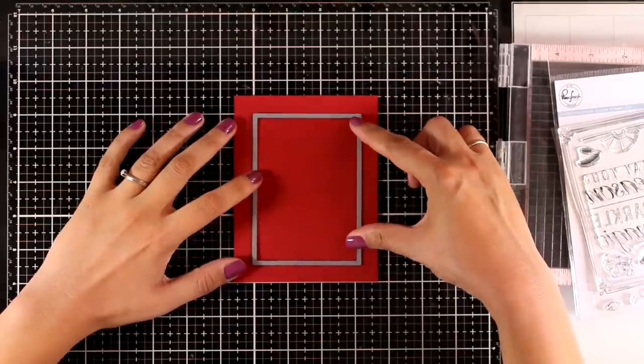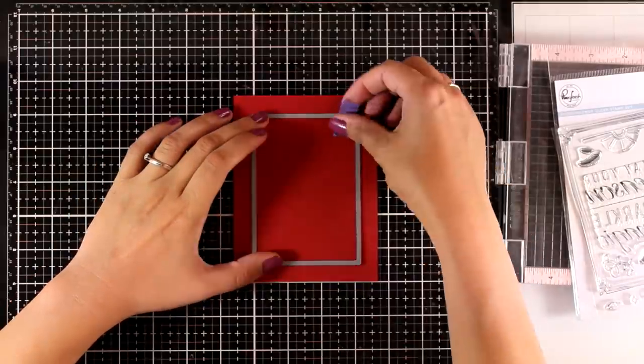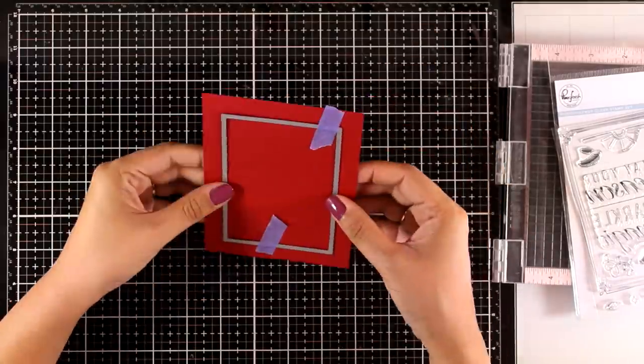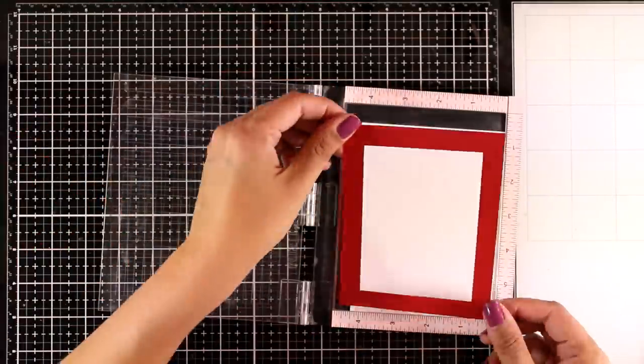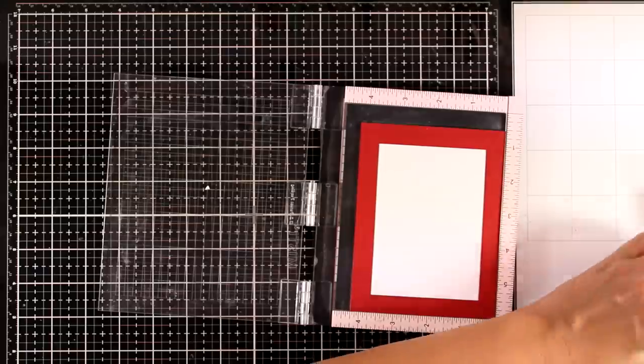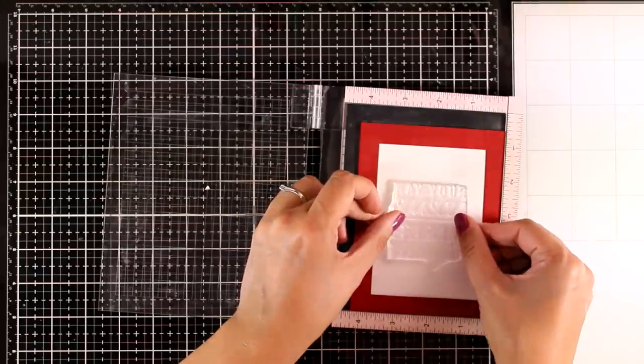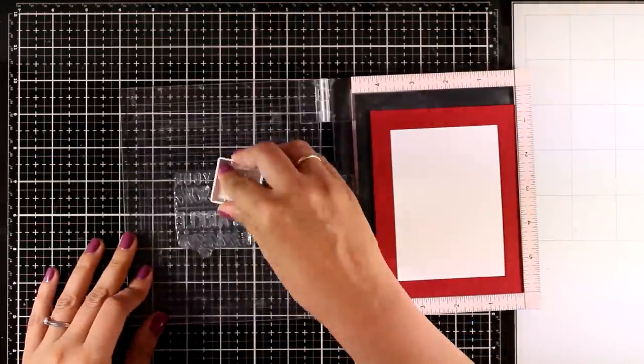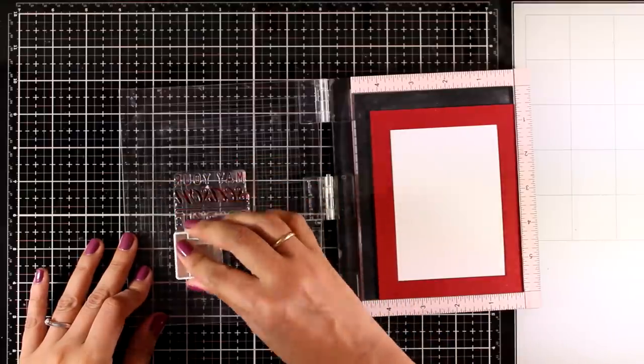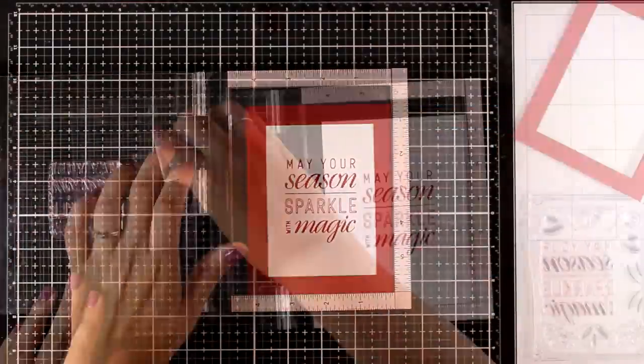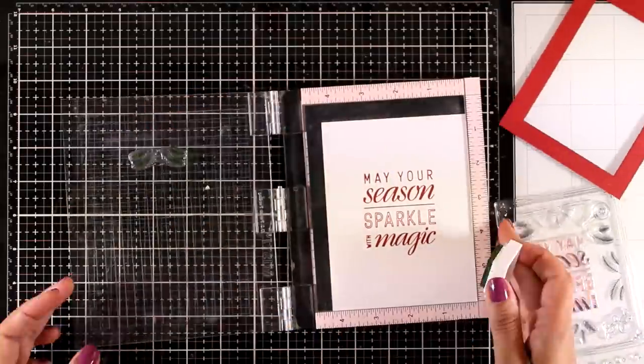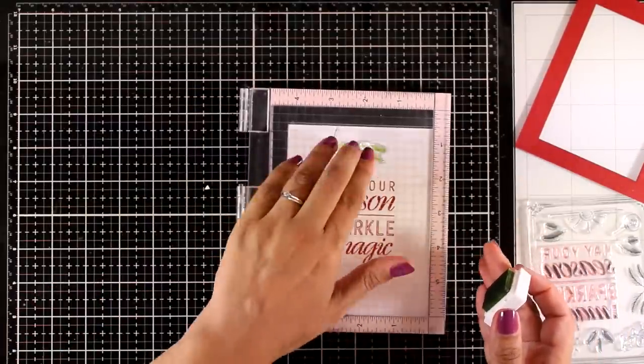Moving on to the third card for today and I'm using a rectangle die to create a little frame. For this card I'm going to do some stamping and playing with all the bits and pieces from the sparkle with magic stamp set so I'm placing temporarily that red frame on top of my card base so that I can easily arrange the stamps, decide where everything is going to go and stamp with different colors.